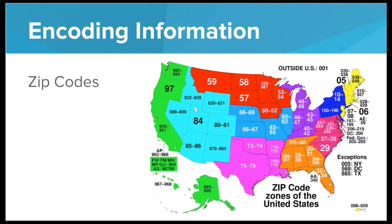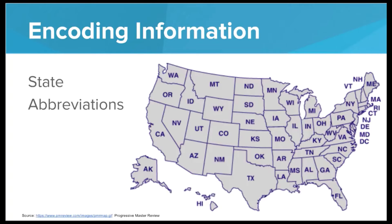We also do this with zip codes in the United States. Every state gets its own series of numbers that define exactly where in the country that zone is — this is a version of encoding. We are encoding the location as a zip code. We also encode information using characters in the real world. For example, every state in the country has its own two-letter abbreviation, encoding the state location with only two letters. So if I'm writing a postcard addressed to MI, someone reading it will know the postcard is being sent to Michigan.